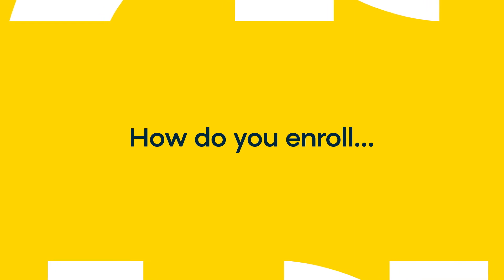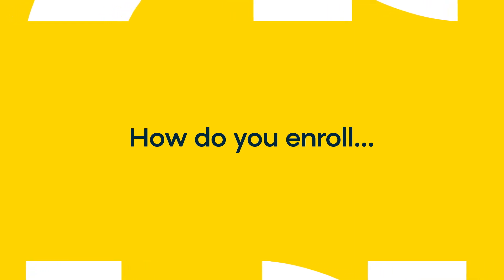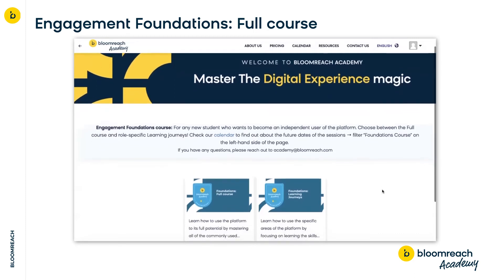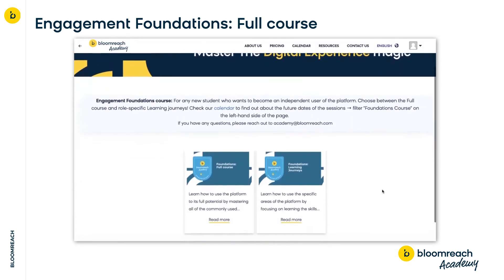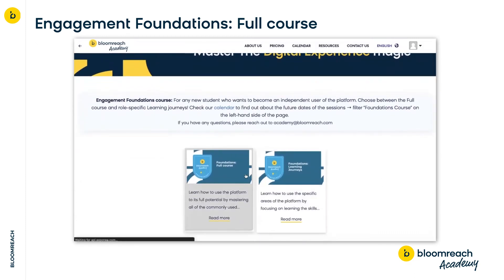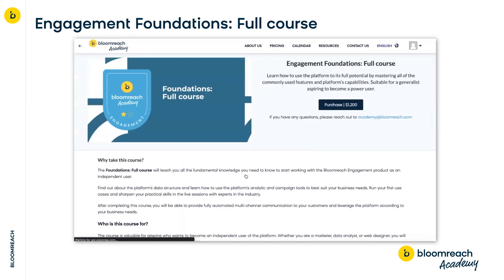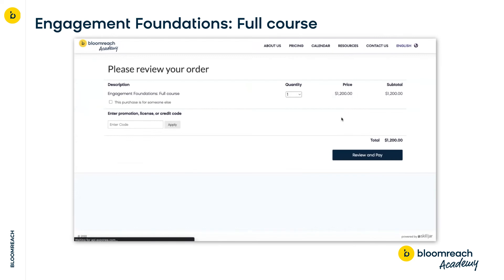So how do you enroll in the Engagement Foundations full course? You can find the purchase button in the upper right-hand corner of this page. Simply click on it and then apply the promo code that you've been granted. If you don't have a code but would love to participate in the training, please review our pricing page and reach out to your account manager or contact academy@bloomreach.com.